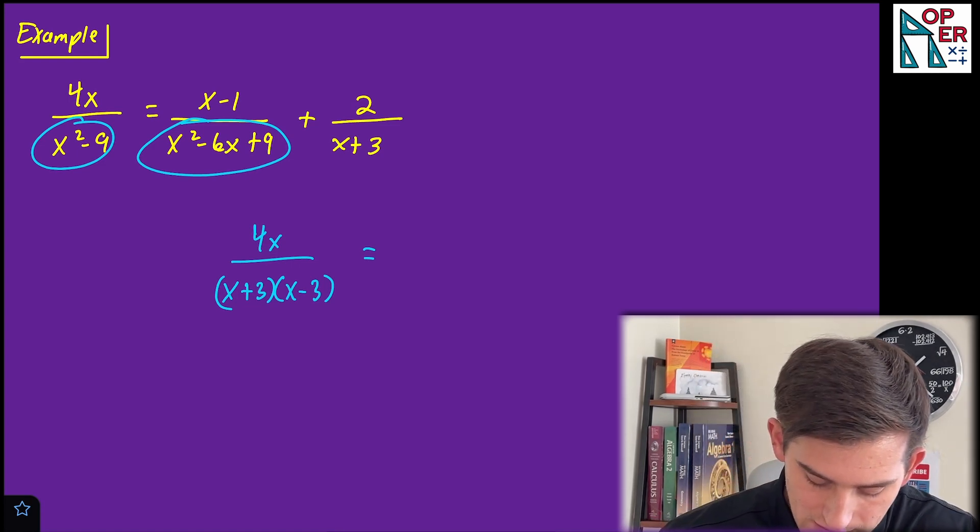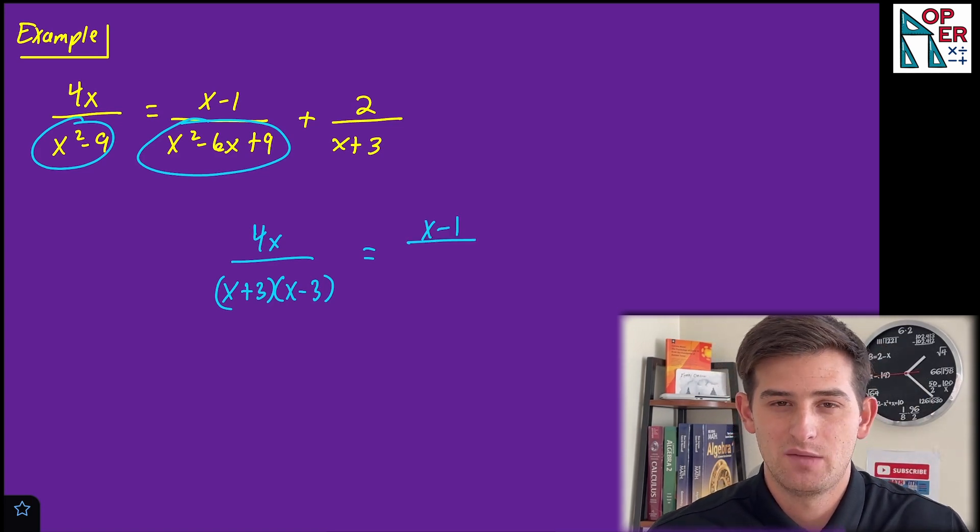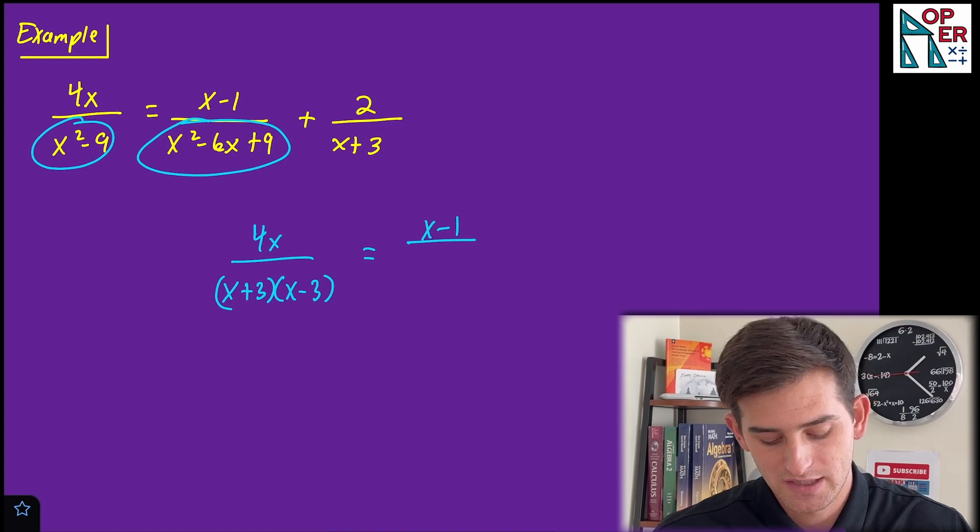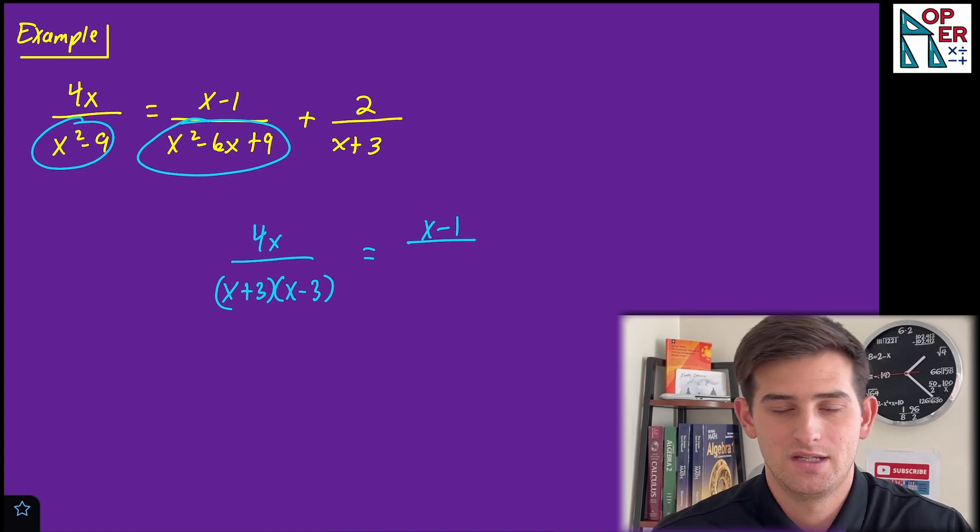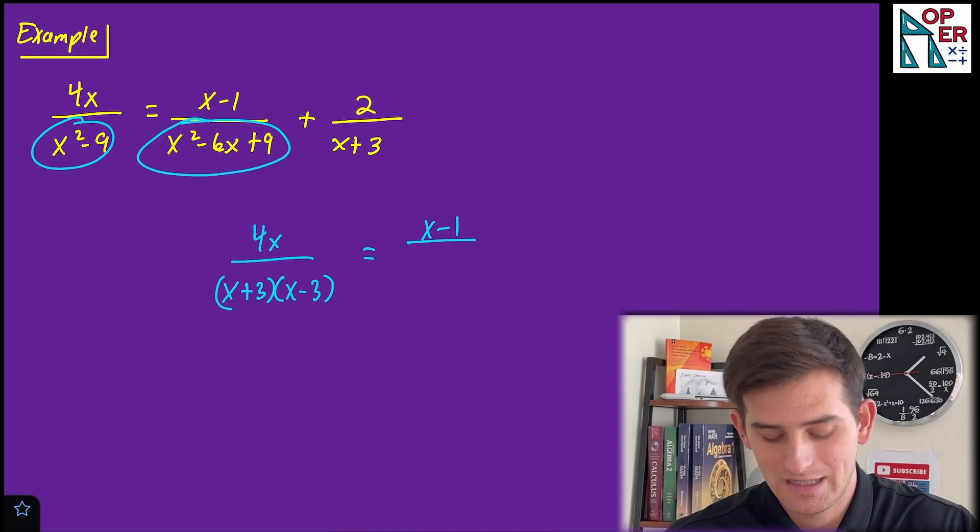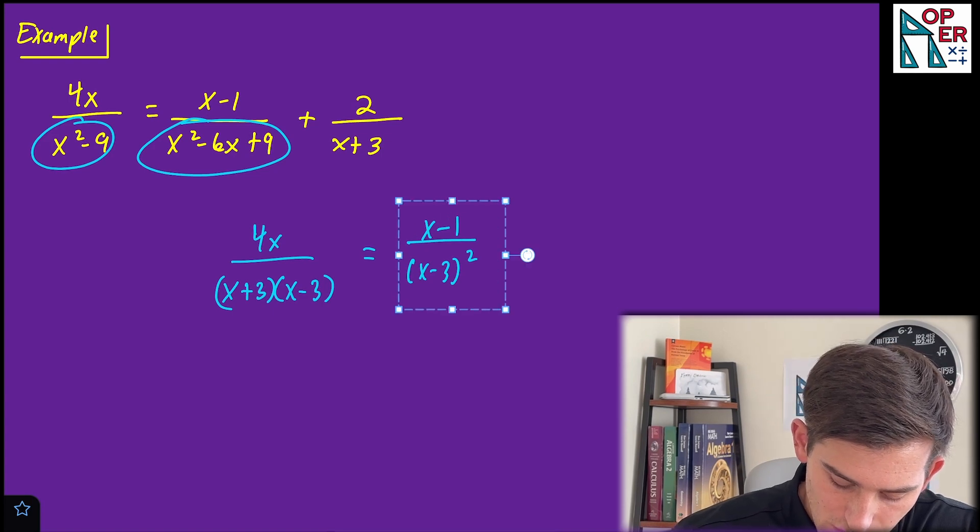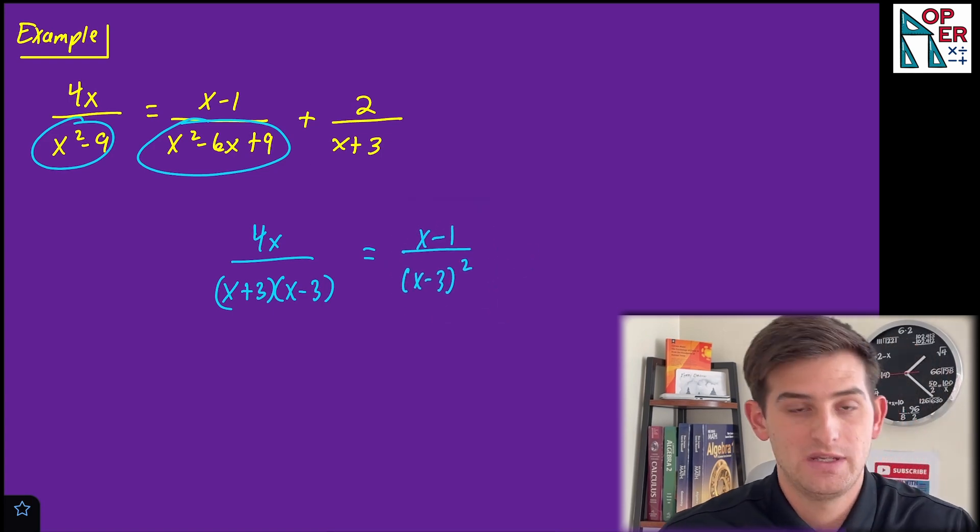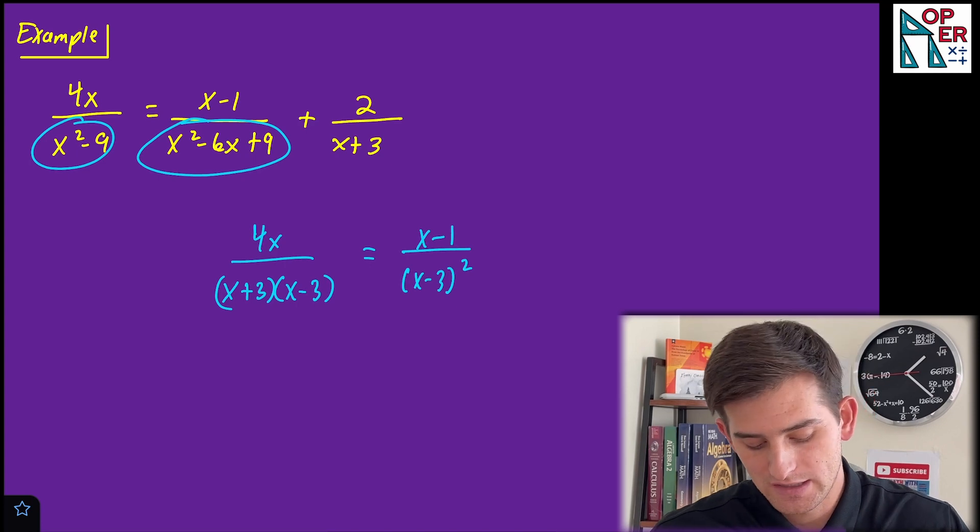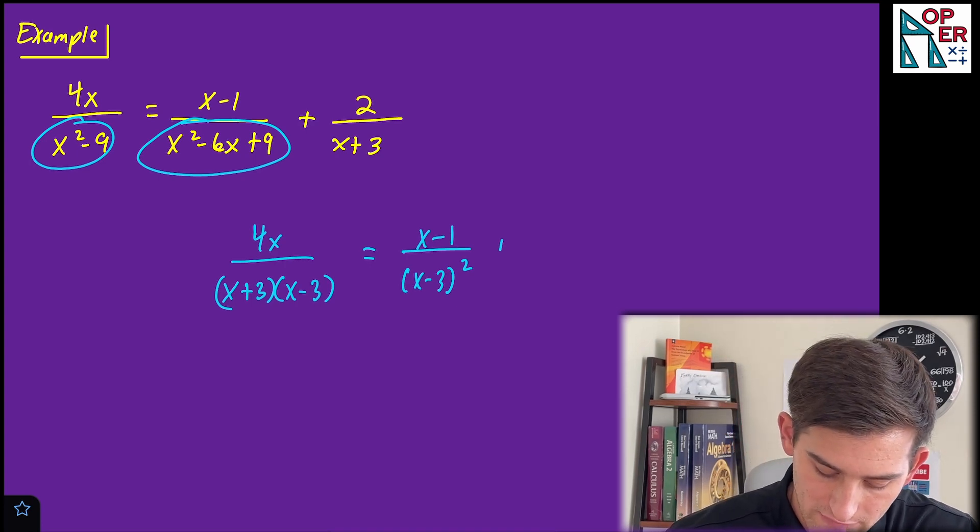Now for our next denominator, we would say we have X squared minus six X plus nine. I noticed that is a perfect square trinomial because if I take my B value, negative six, and I divide it by two, we get negative three. And then when we square that, we get nine. So I know that would factor as X minus three quantity squared. So X minus three, because we had minus six X there, and that's a perfect square trinomial. So it factors as the square of a binomial. And then we have our other piece over here, two over X plus three.